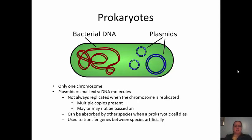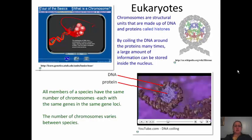Because of that, we actually use plasmids to transfer genes between species artificially — we'll be discussing their use in genetic engineering in more detail. Eukaryotic cells are much more complicated: the DNA has been coiled and wrapped around proteins called histones. By coiling the DNA around these histones, we can store a large amount of information inside the nucleus — remember that humans have 46 chromosomes that need to be stored inside each and every nucleus in our body.